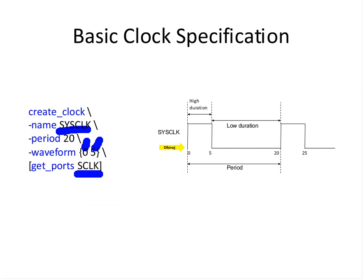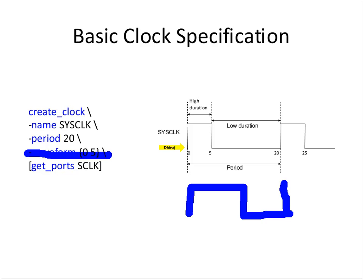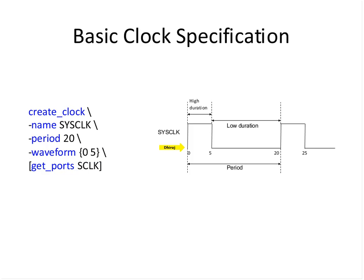If you do not give the waveform and omit it, prime time will create a clock of period 20 with 50 percent duty cycle — that means it will rise at 0 and fall at 10. So if you choose to omit the waveform, please be reminded that it will create a 50 percent duty cycle clock by default. Now we will see some other advanced options of create_clock.